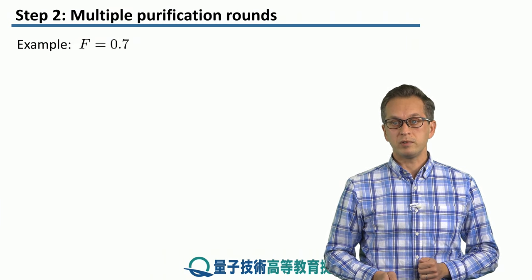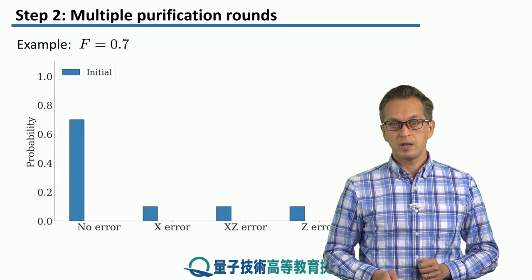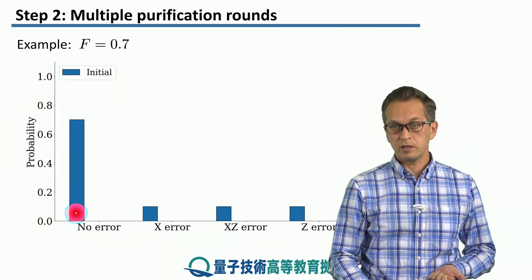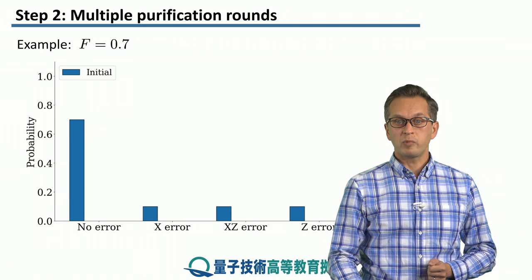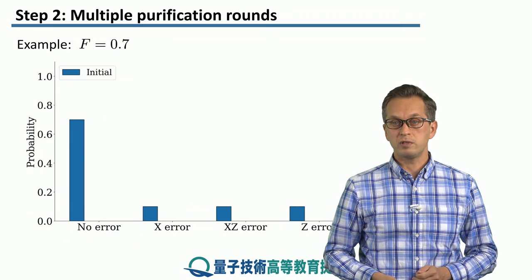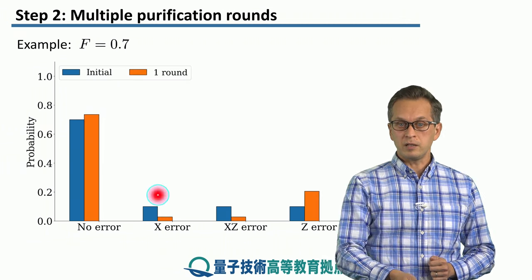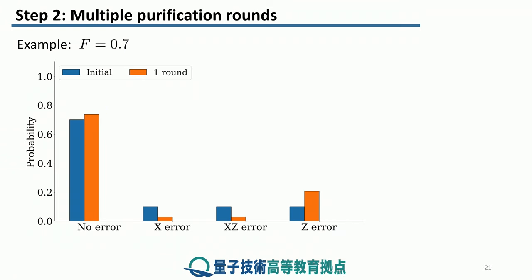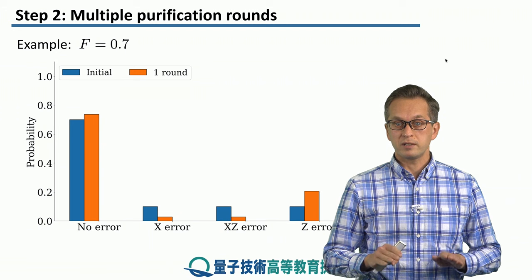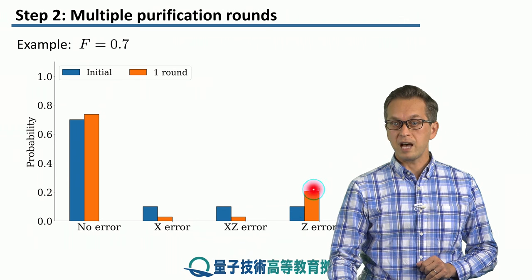To see this more clearly, let's consider a particular example where we start with a noisy Bell pair of fidelity F = 0.7. The probability of no error is 0.7, and the probabilities of x, xz, and z errors are each 0.1, equal because we're considering a Werner state. After one round of x purification, our new fidelity increases, which is good. The x and xz errors get suppressed — they become lower than their initial values. On the other hand, the z error gets amplified.